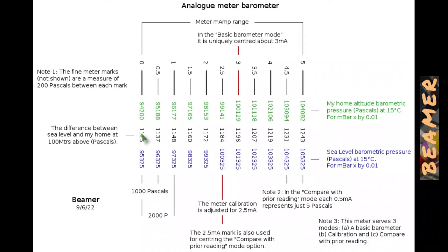The next, this little note here. This meter is also used for calibration and it's the third switch from the left-hand side. If you switch that on at any time, the meter will automatically go to this point here, which is 2.5 milliamps. You can adjust the little potentiometer within the barometer to align the meter to exactly 2.5 milliamps. It's a calibration, isn't it? The next note at the bottom here is the 2.5 milliamp mark is also used for centering the compare with prior reading mode option. Well, that's the diff mode option as we've just discussed. And that centers around 2.5 milliamps as well, whereas the direct centers itself around 3 milliamps, which is the sea level 101325.